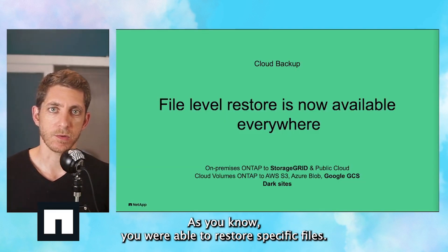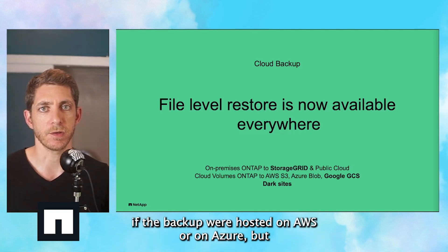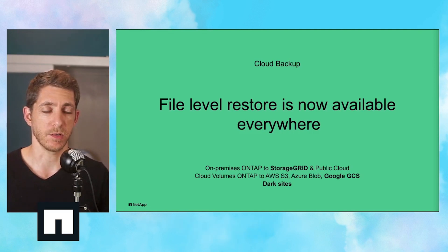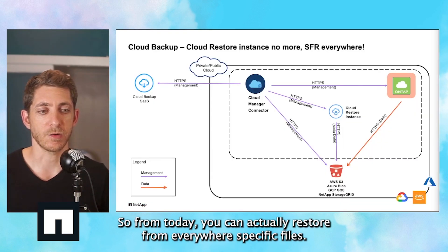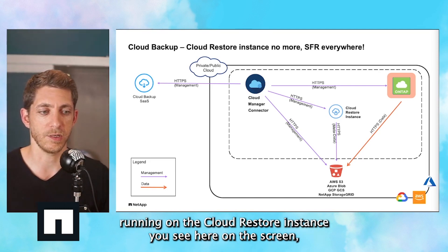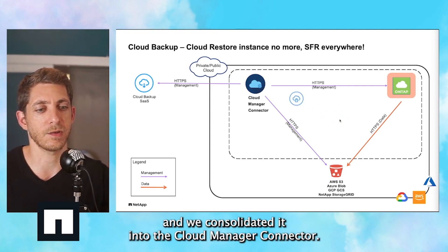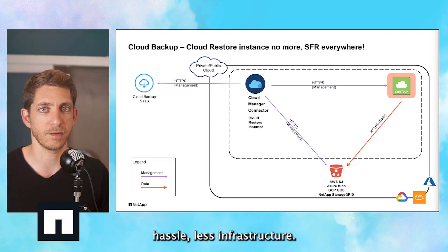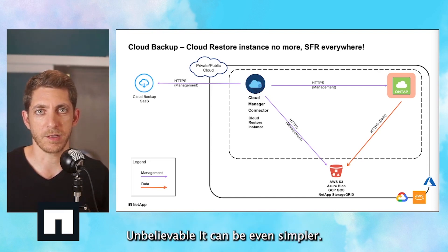You were able to restore specific files if their backup were hosted on AWS or on Azure, but you couldn't do that on Google or Storage Grid. So from today, you can actually restore specific files from everywhere. We did amazing architectural changes — we took the containers running on the Cloud Restore instance and consolidated it into the Cloud Manager connector. Now it can literally run everywhere: less endpoints, less hassle, less infrastructure.